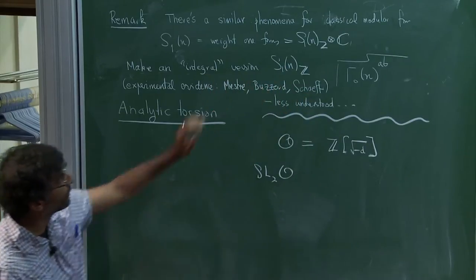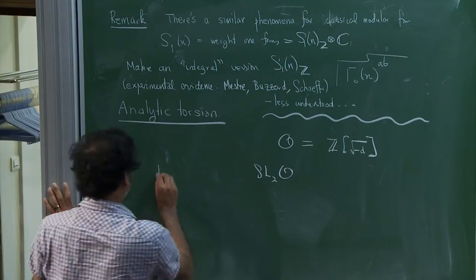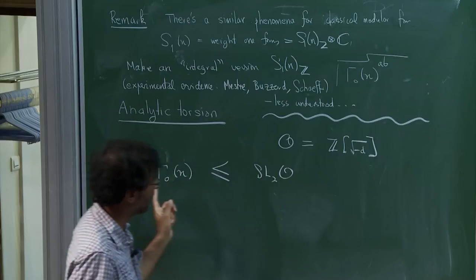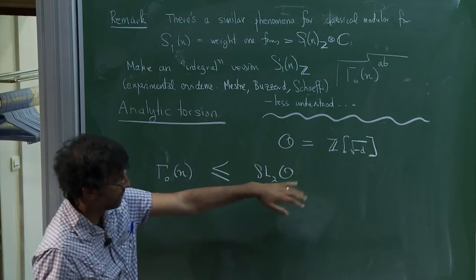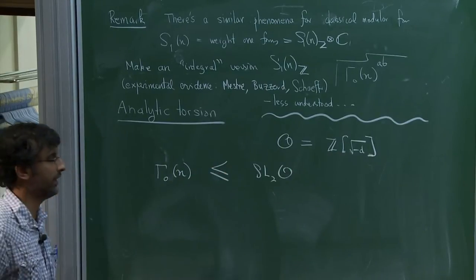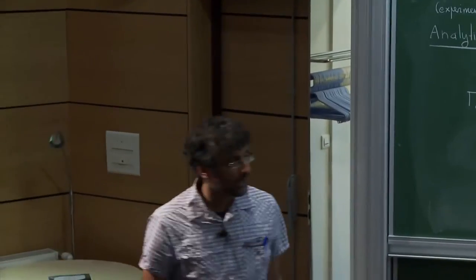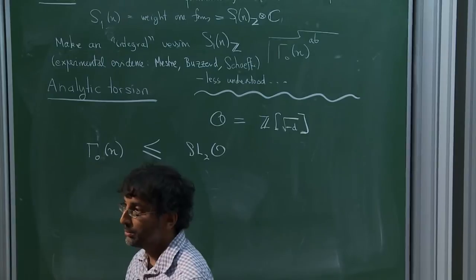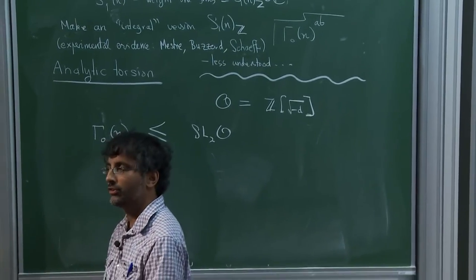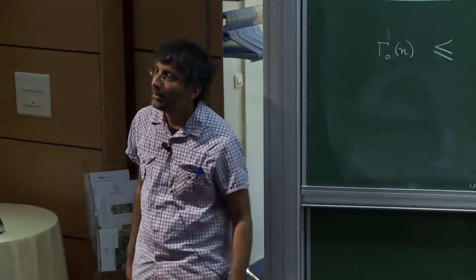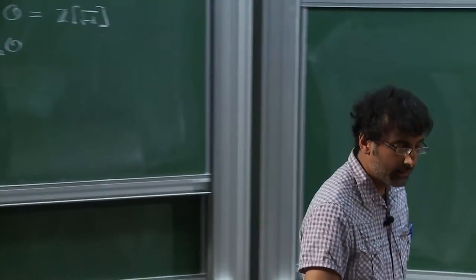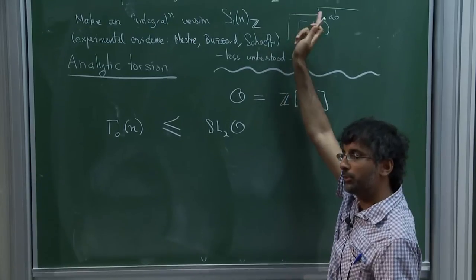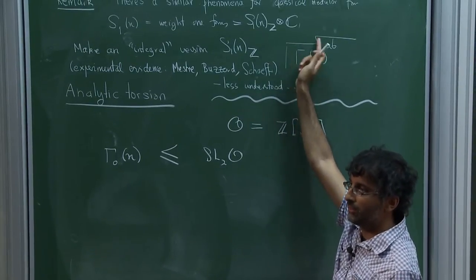We go back to our setting. We have this subgroup, and many of the results are proved only in the co-compact setting, though they should certainly extend here. For example, if I give you n = 500 and ask you to give me a basis for the space of weight one forms over the complex numbers or mod 7 — even over the complex numbers it's not trivial. You can embed this space in a higher weight space by multiplication, but then you have to figure out what its image is.